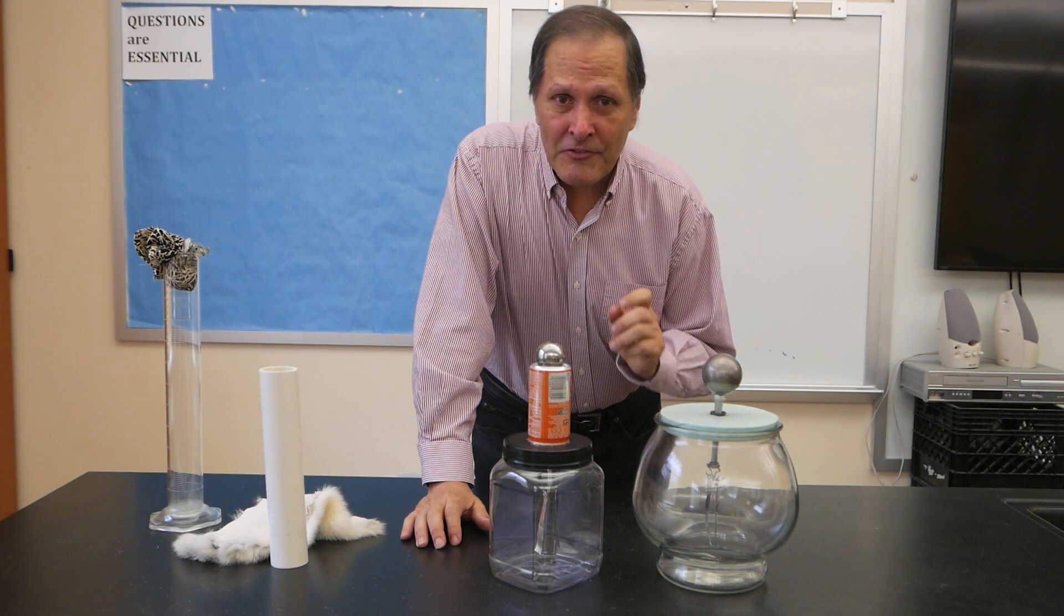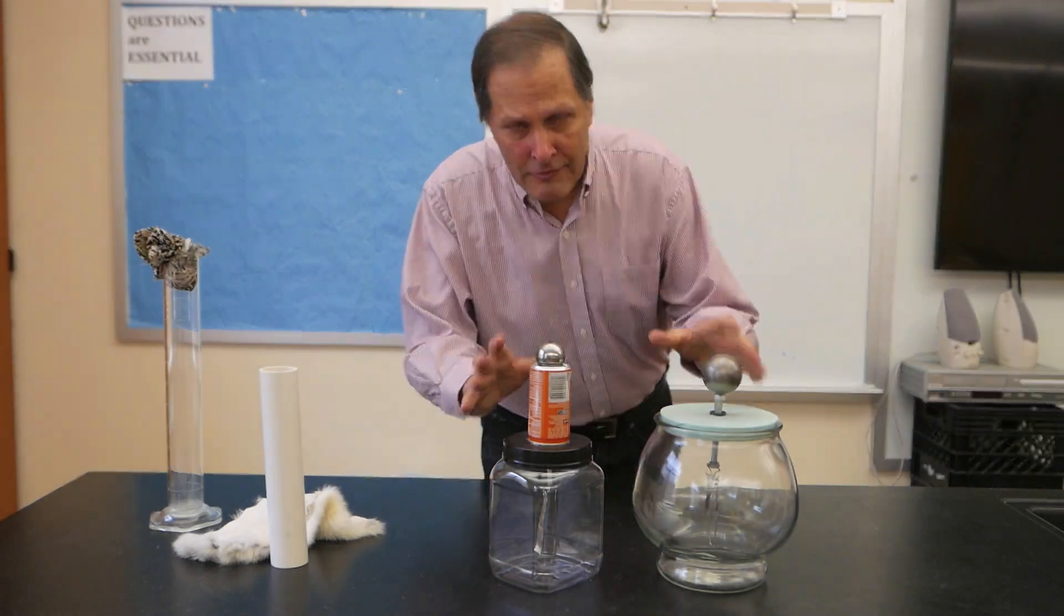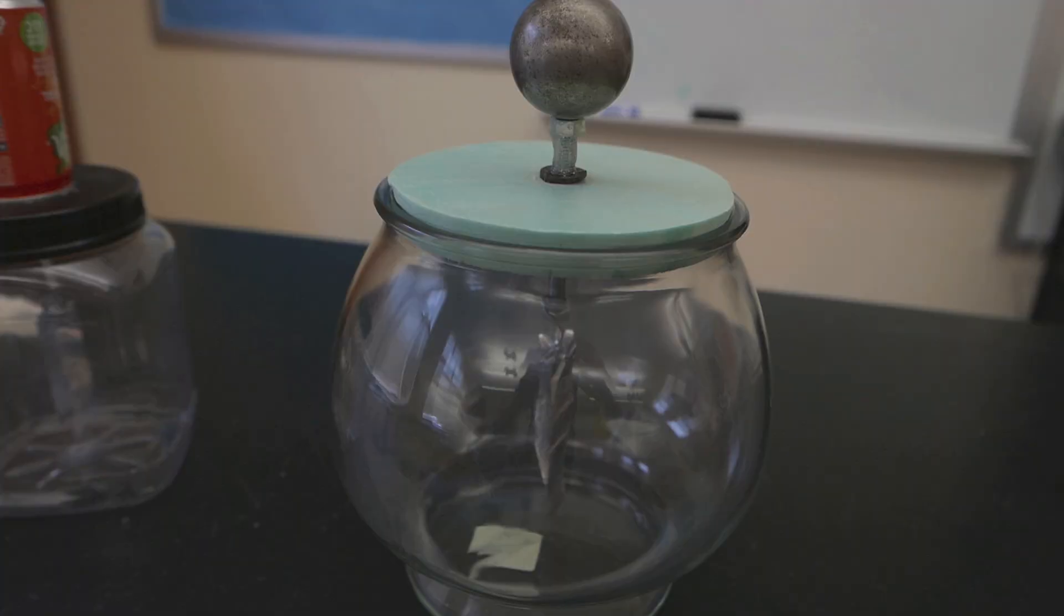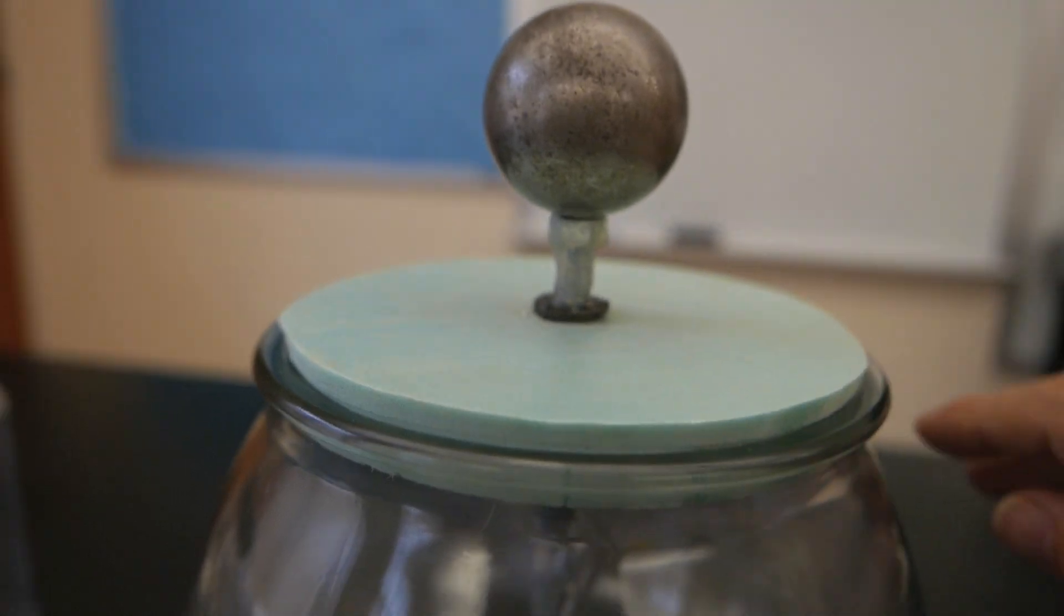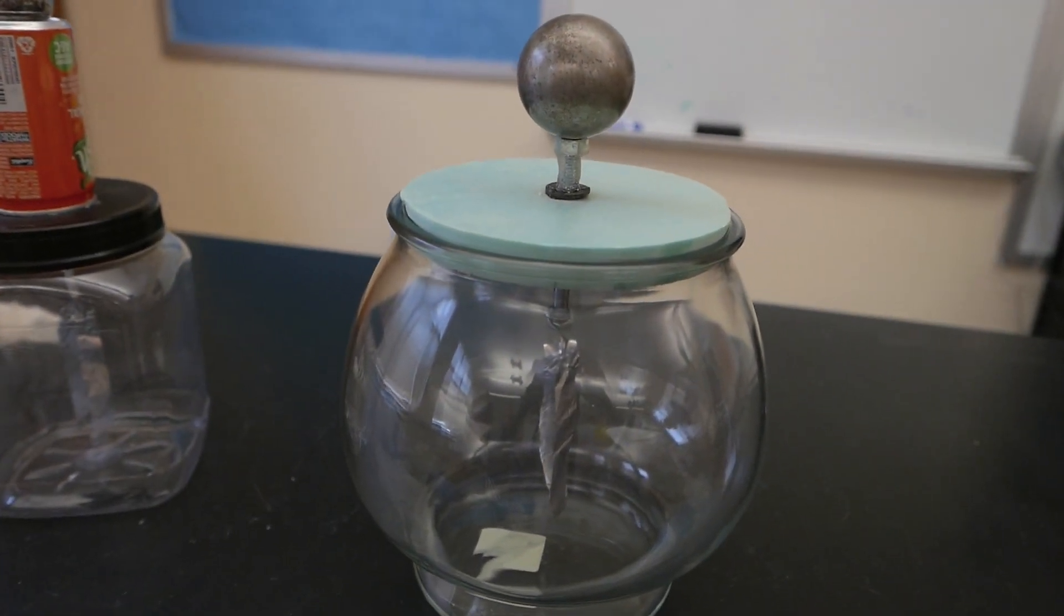Now a classic piece of static electricity equipment is the electroscope. These devices were originally designed to detect and measure static charges. This one has two pieces of aluminum foil hanging down from the wires attached to a bolt, comes up through the center, and has a large metal ball sitting on top of it.